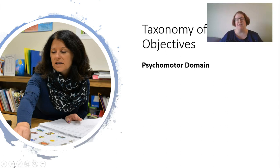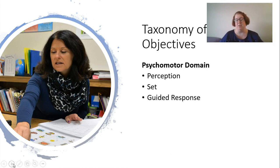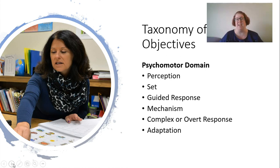Finally we have the psychomotor domain. First, can they perceive the action? Then the set — are they ready to do the action? Guided response is asking them to do it with your help. Mechanism is getting them to do it. Complex overt response is asking them to build upon that. Adaptation is asking them to adapt it to a new situation, and origination is asking them to create their own.